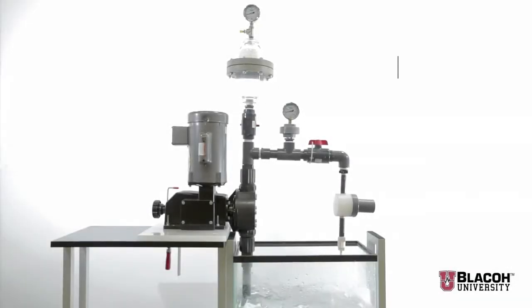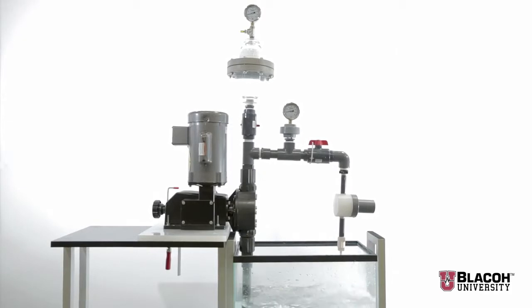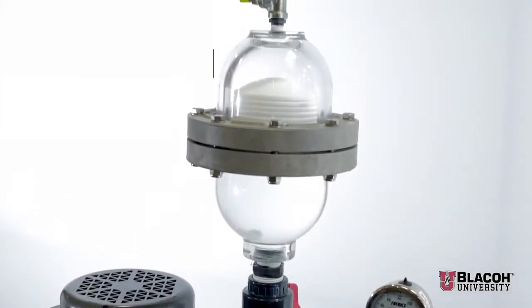This test stand demonstrates the Blayco pulsation dampener with a chargeable air control and a motor driven diaphragm metering pump. The chargeable air control consists of a Schrader type charging valve and a pressure gauge.